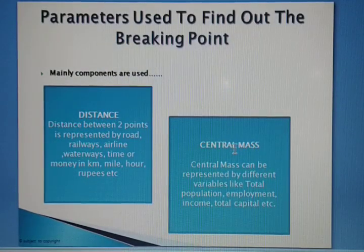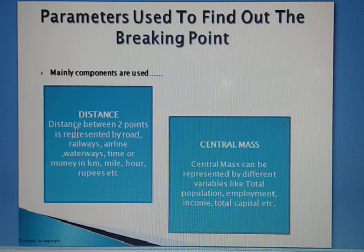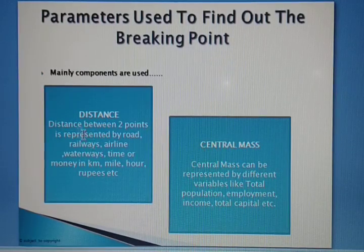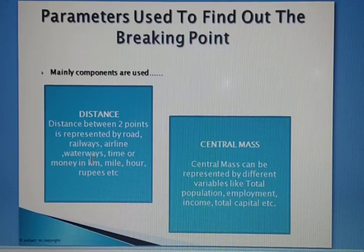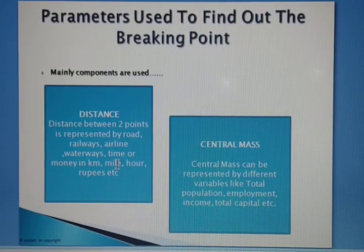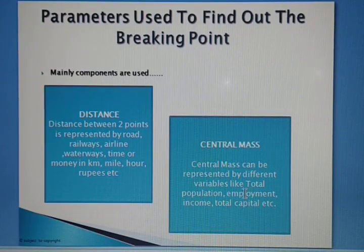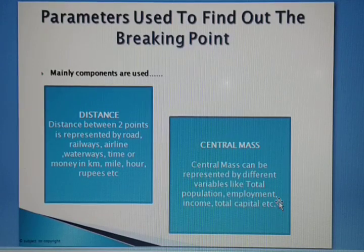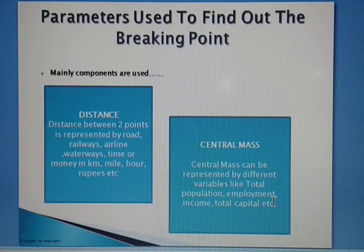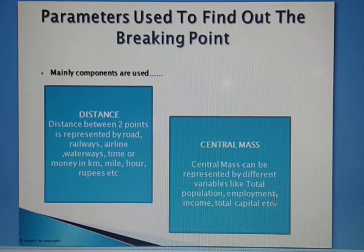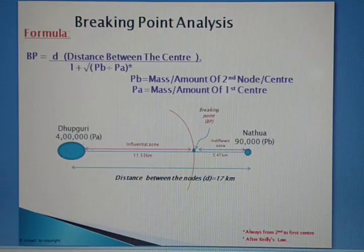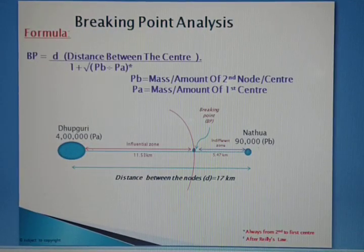Mainly two components are used to find out the breaking point. One is distance and another is central mass. Distance between two points is represented by road, railway, airline, waterways, time, or money — expressed in kilometers, miles, hours, or rupees. Central mass can be represented by different variables like total population, employment, income, or total capital.